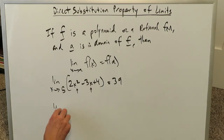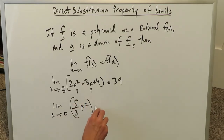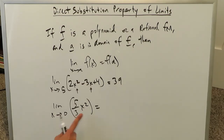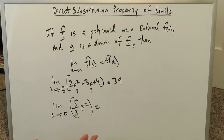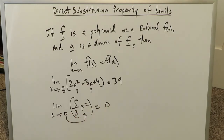Another example of a polynomial: limit as x approaches 0 of 3x squared — literally a parabola. If you know the domain to be negative infinity to infinity, which it is, with vertex at the origin, then 0 very well lies in that domain. Your answer is 0, simply by plugging this in. This is your direct substitution property of limits.